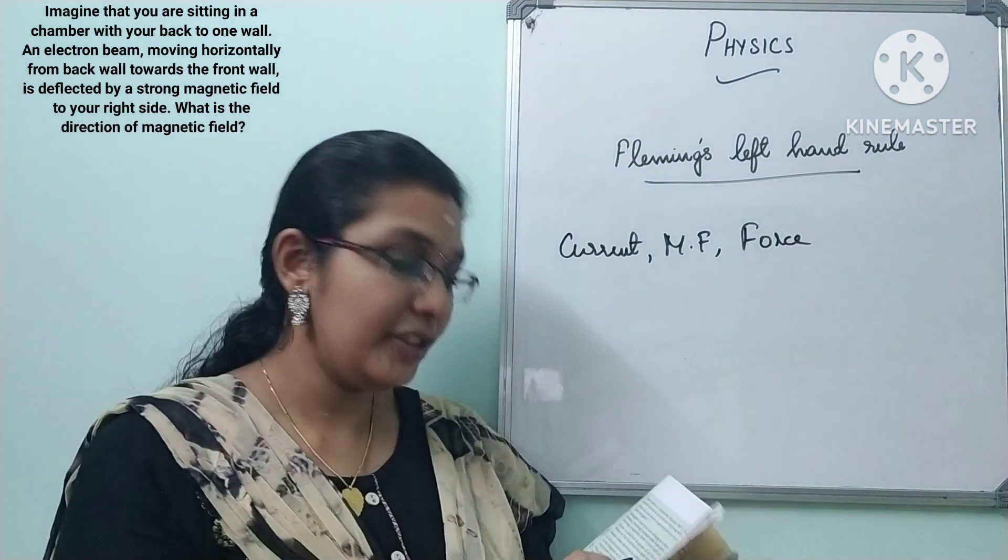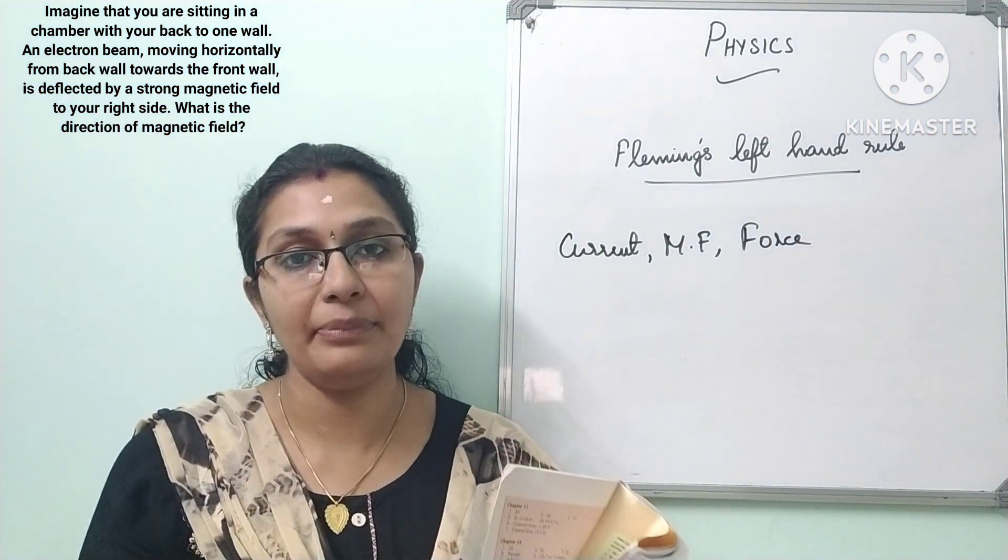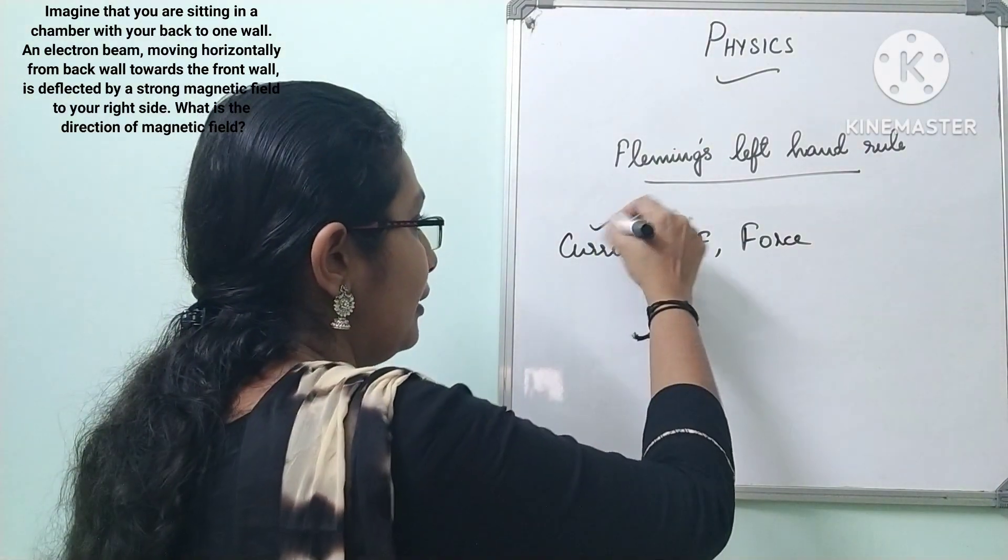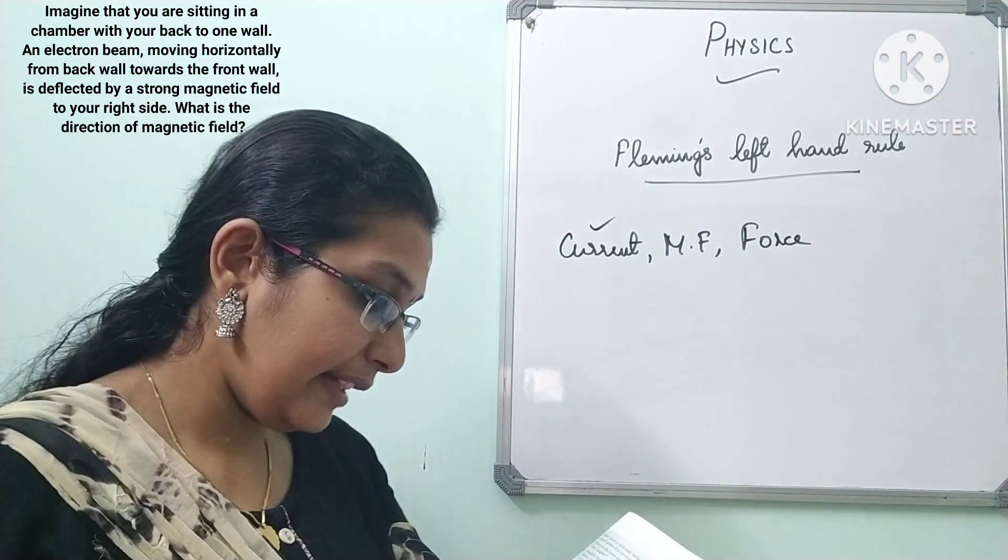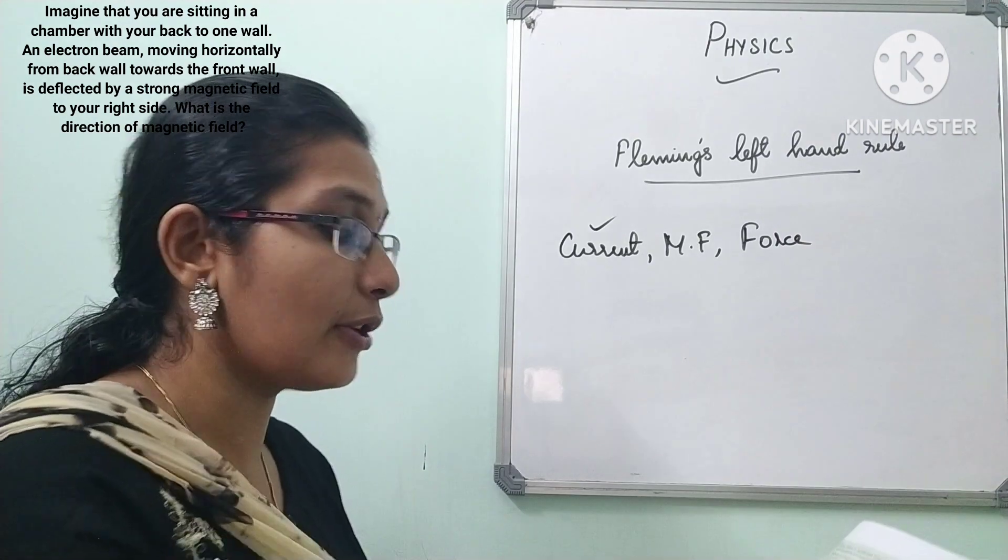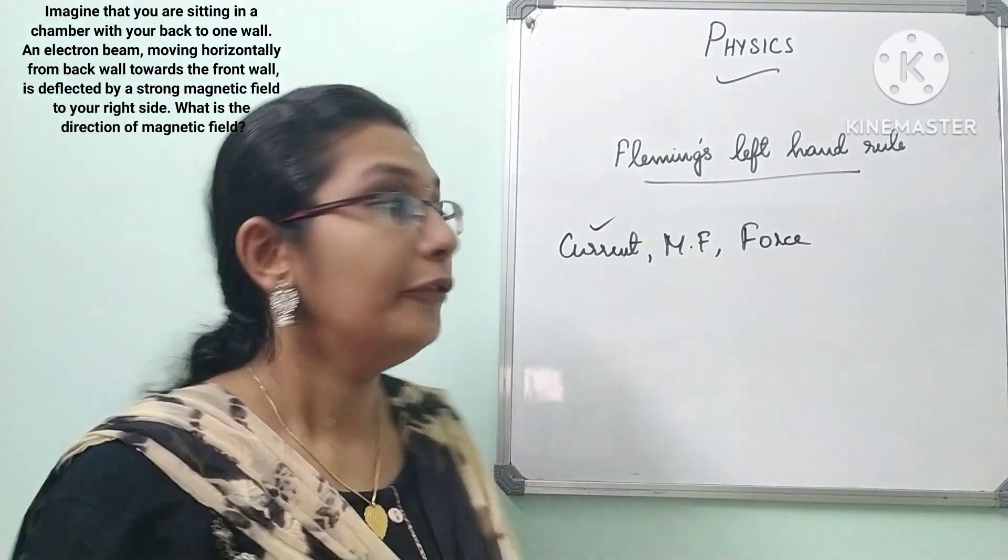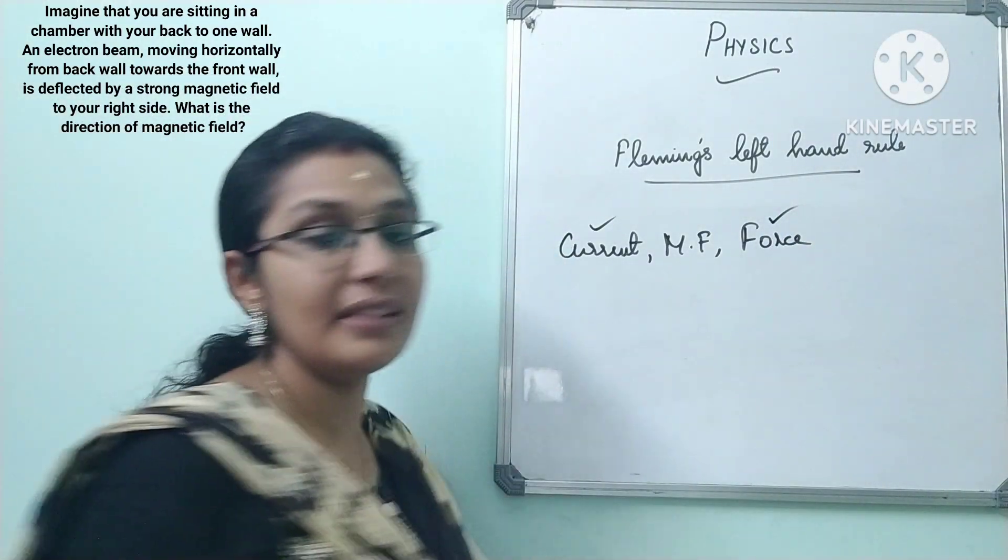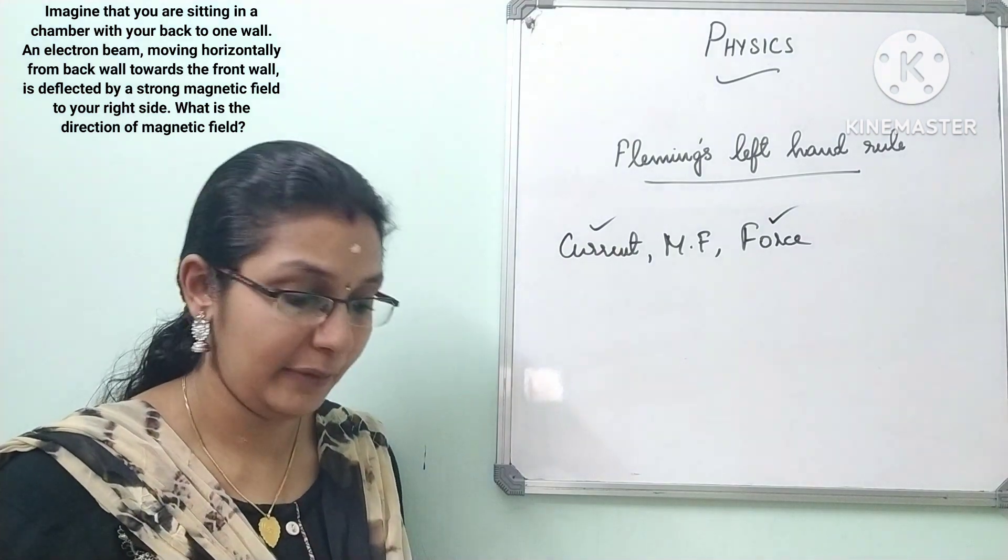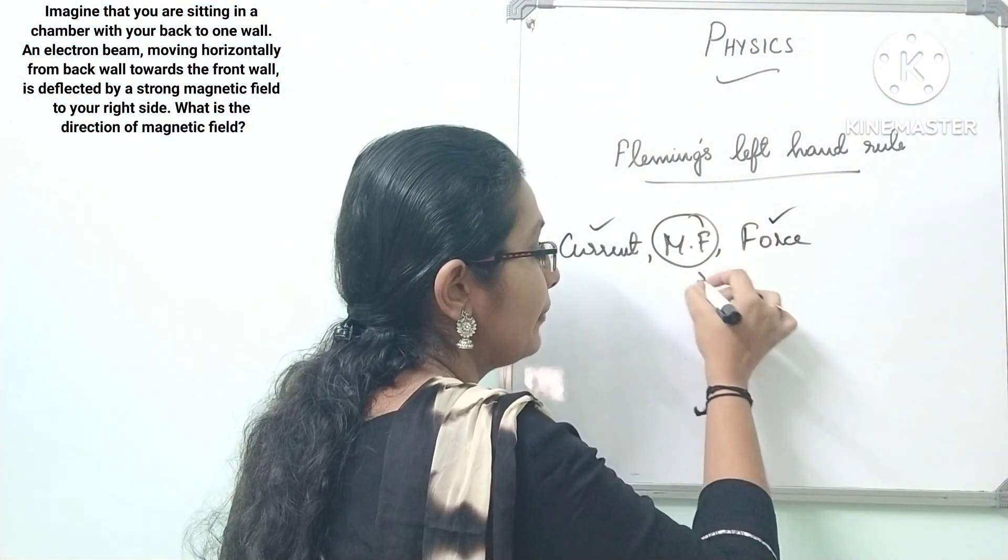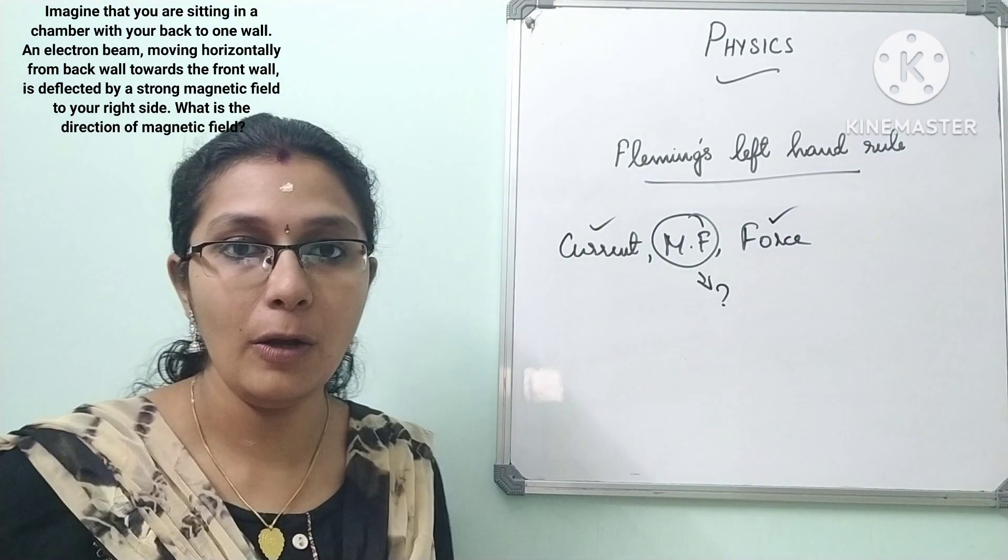Here, the direction of the electron is given, so from that we can find the direction of current. Then it says deflected by a strong magnetic field, which means the direction of force is given. It's not the magnetic field that's given. We have to find the direction of the magnetic field.